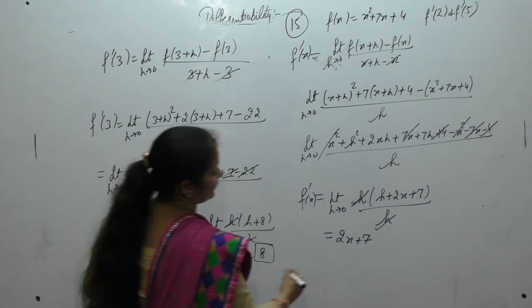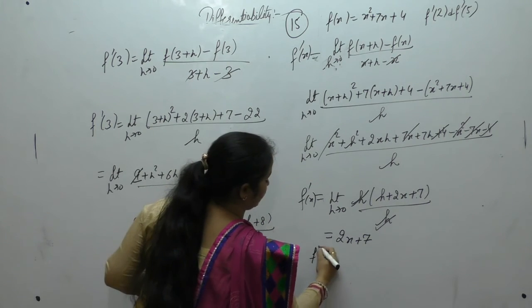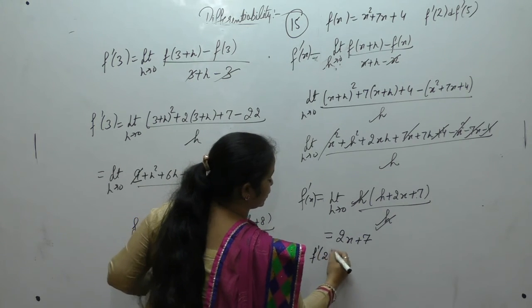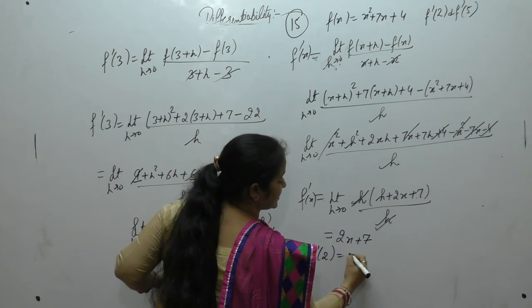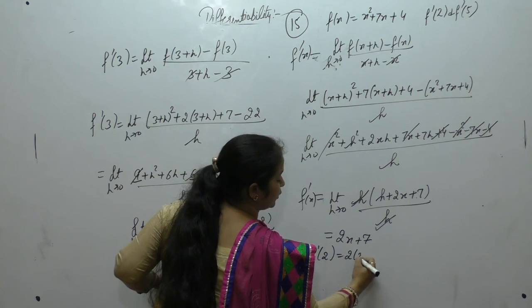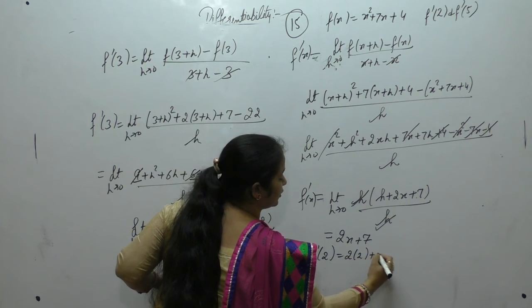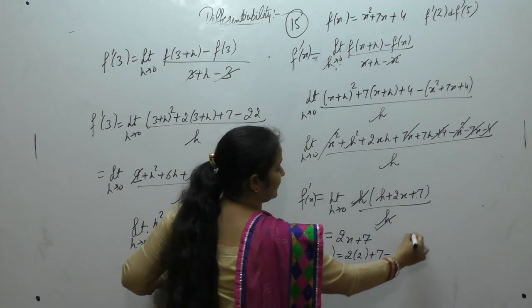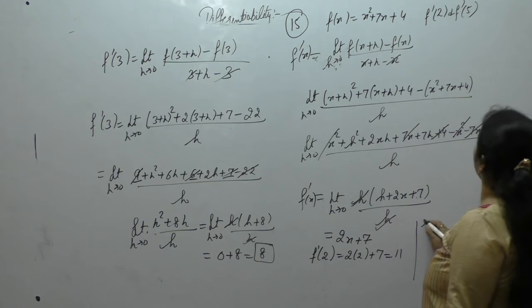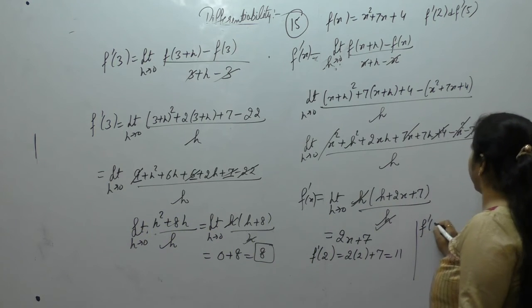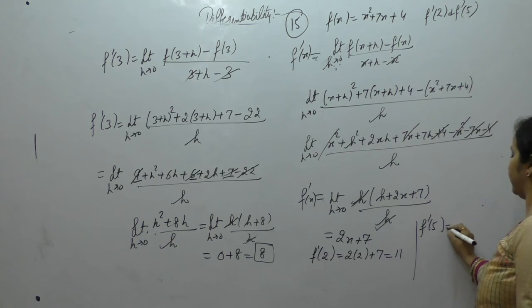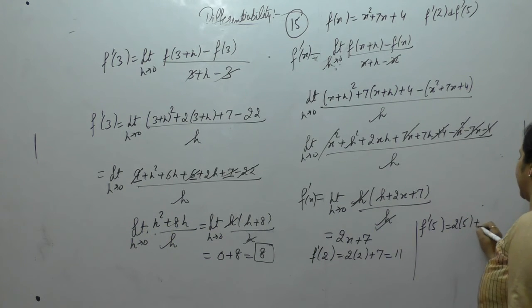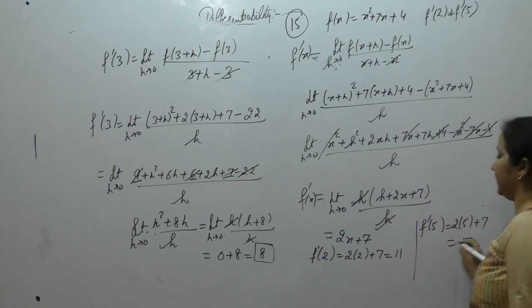Now find f'(2): put x = 2, giving 2×2 + 7 = 4 + 7 = 11. And f'(5): put x = 5, giving 2×5 + 7 = 10 + 7 = 17.